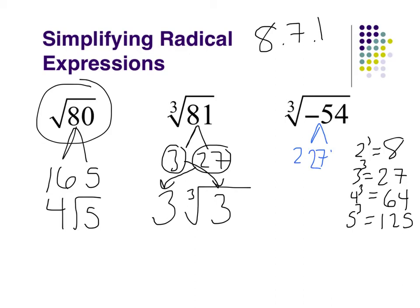So my cube root of 27 is 3. And whenever I have this negative here, I'm just going to take the negative out in front with it. Negatives aren't a bad thing like they are with square roots, because I could have negative 3 times negative 3 times negative 3 gives me negative 27.